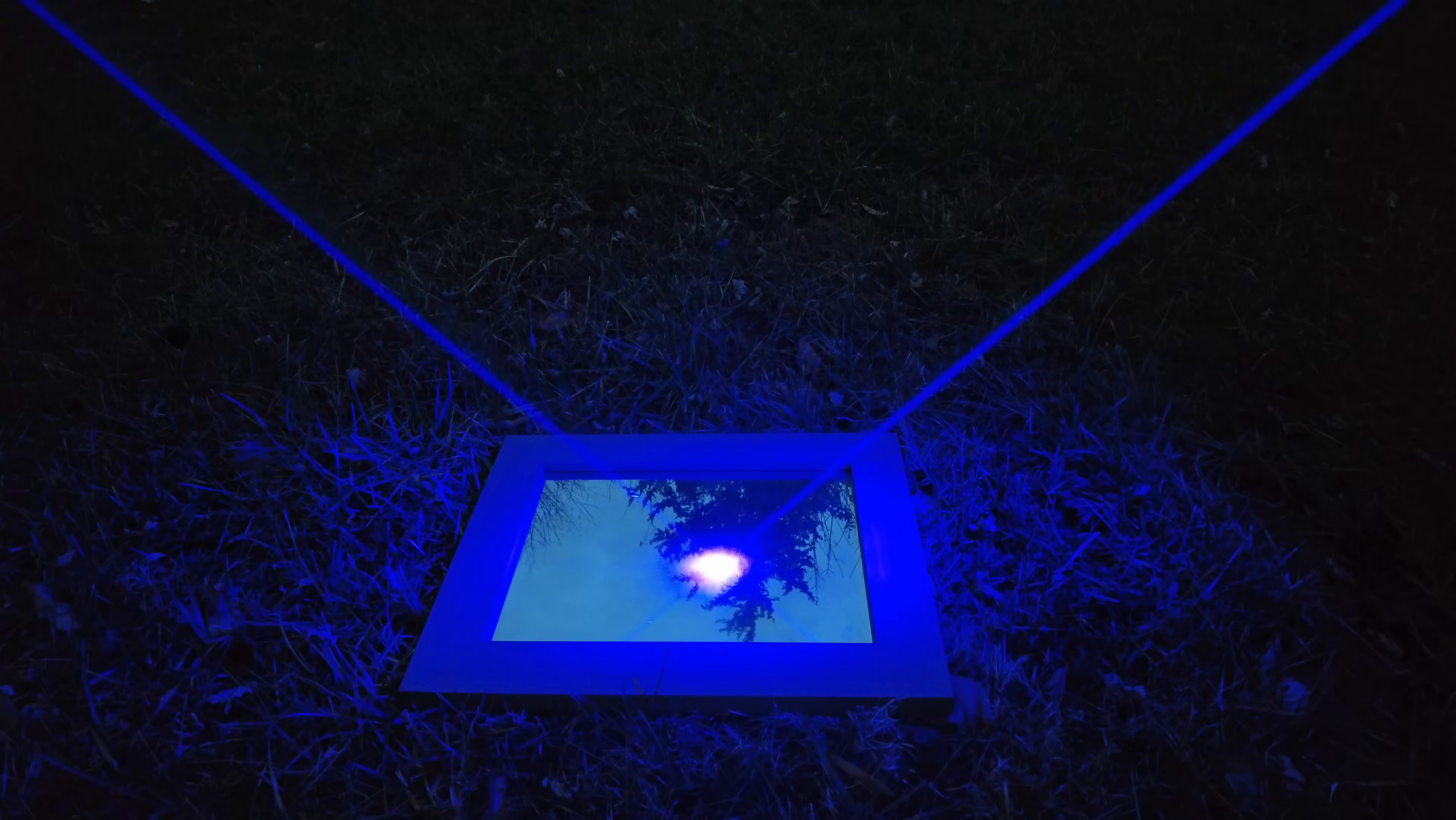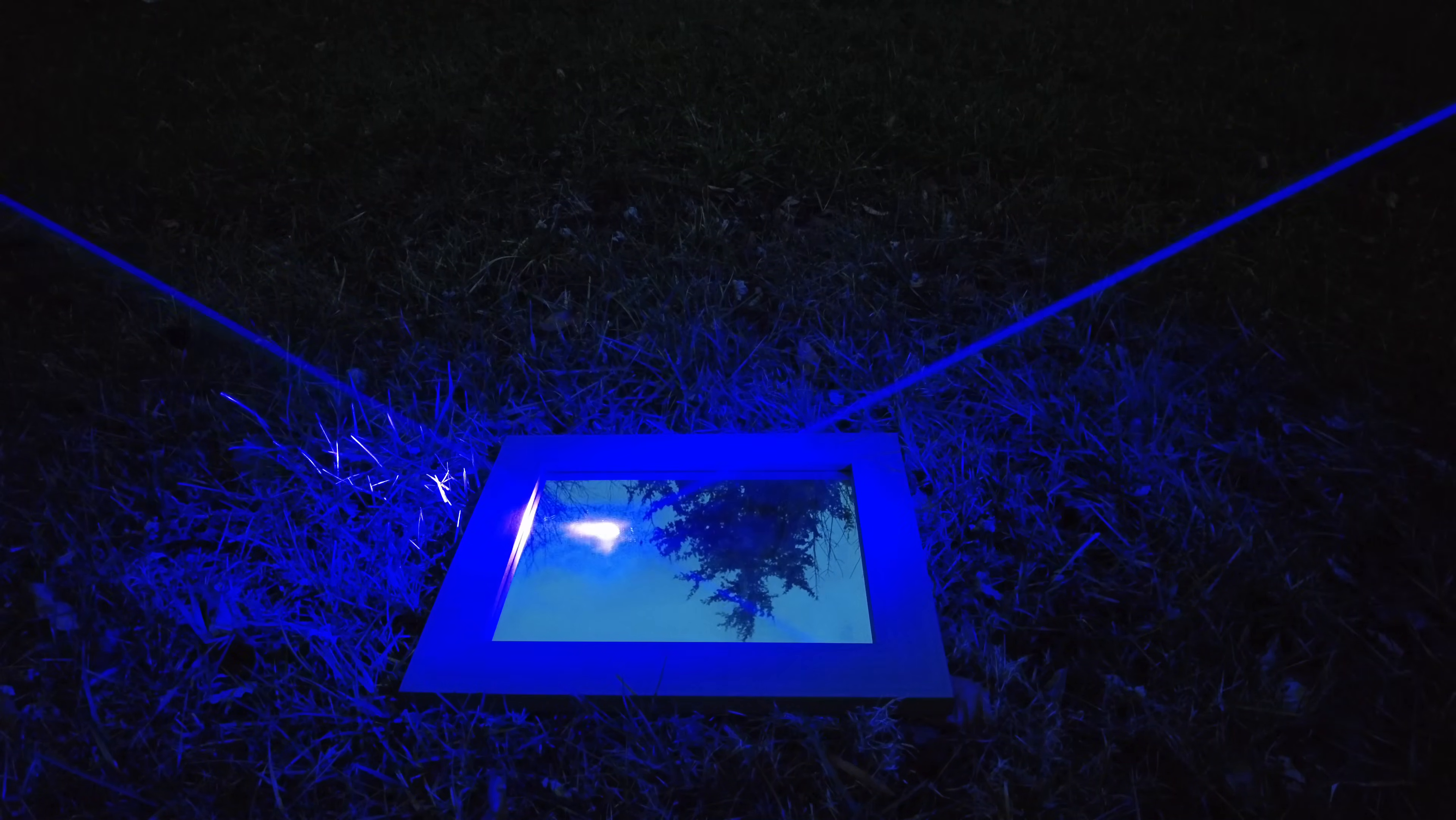So light doesn't simply bounce off a mirror like a tennis ball or something. Instead, it's absorbed by the mirror, where it's briefly converted into the kinetic energy of electrons on the surface, and then re-emitted as a new wave. This is why mirrors are made using conductive metals with free electrons, like silver.